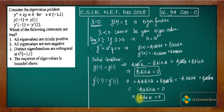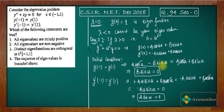For a non-trivial eigenfunction, we need a and b to be non-zero. If both a and b are zero, we get a trivial y(x), which is meaningless. Therefore we require sin(μ) = 0.